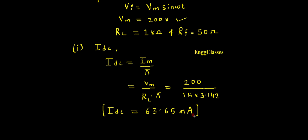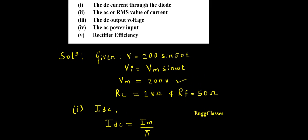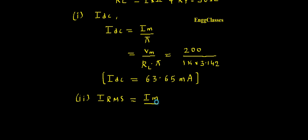Moving on to the second parameter: the AC or RMS value of the current, IRMS. Just as we had a direct formula for IDC, the formula for IRMS of a half-wave rectifier is IRMS = IM / 2.